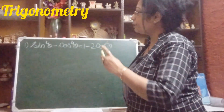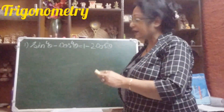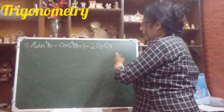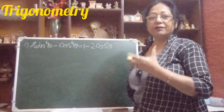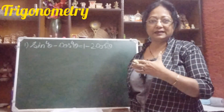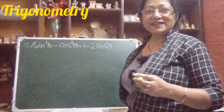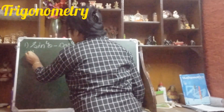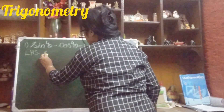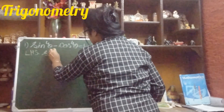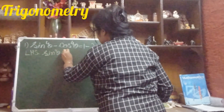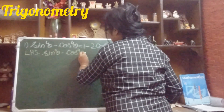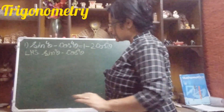Our first sum is: sin⁴θ minus cos⁴θ equals 1 minus 2cos²θ — we have to prove left hand side equals right hand side. So let us start. LHS equals sin⁴θ minus cos⁴θ. This is our left hand side.